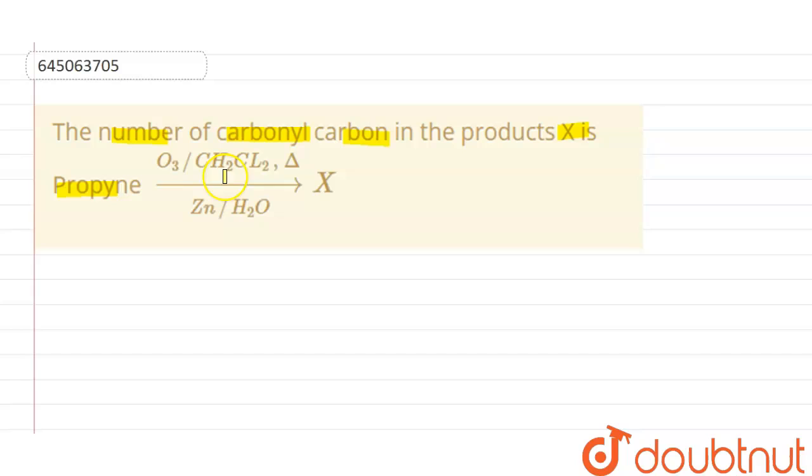So it is given that propyne is being treated with ozone in presence of CH2Cl2 and it is heated, and later it is zinc hydrolyzed to get X. Now we need to identify the number of carbonyl carbon present in the product X.